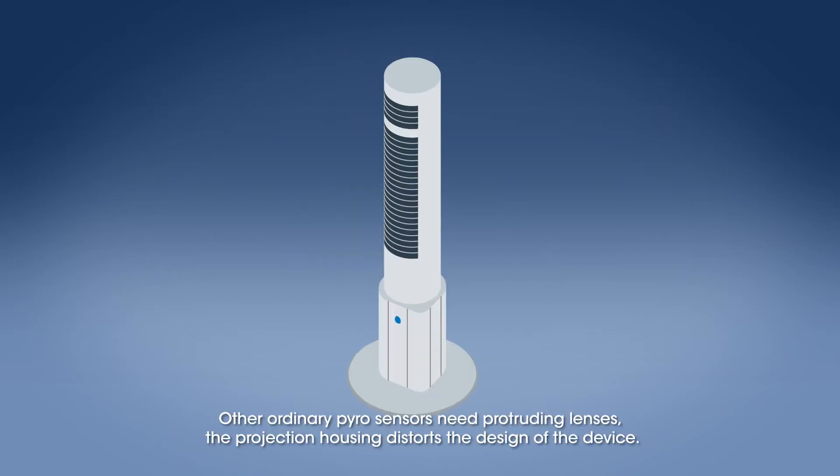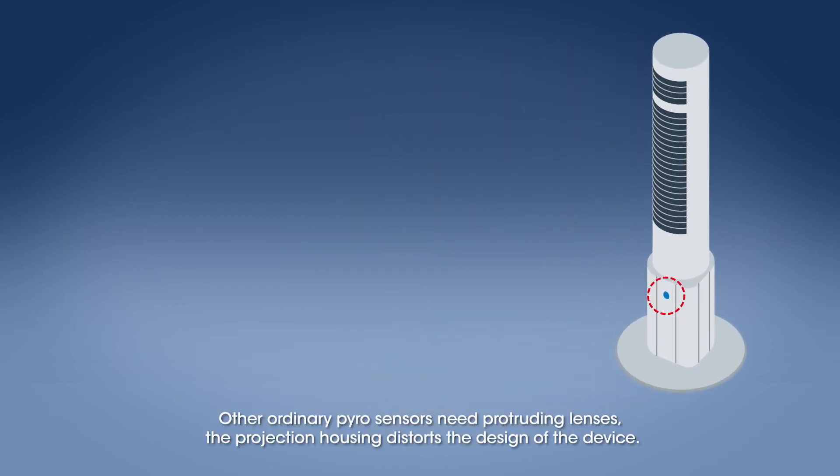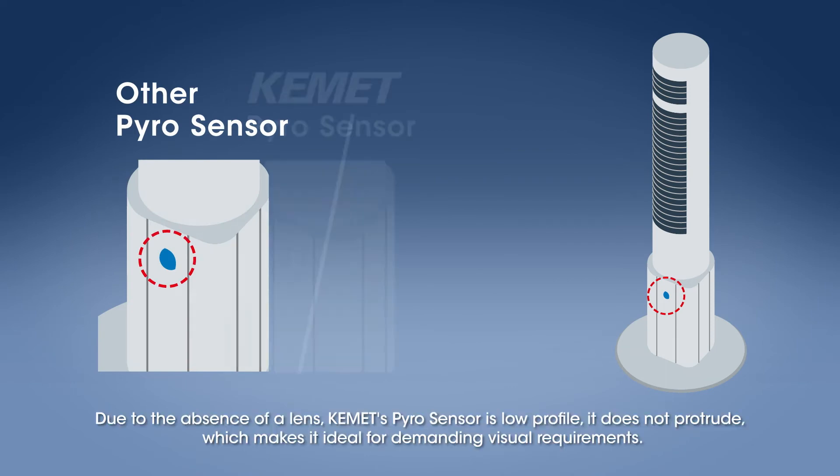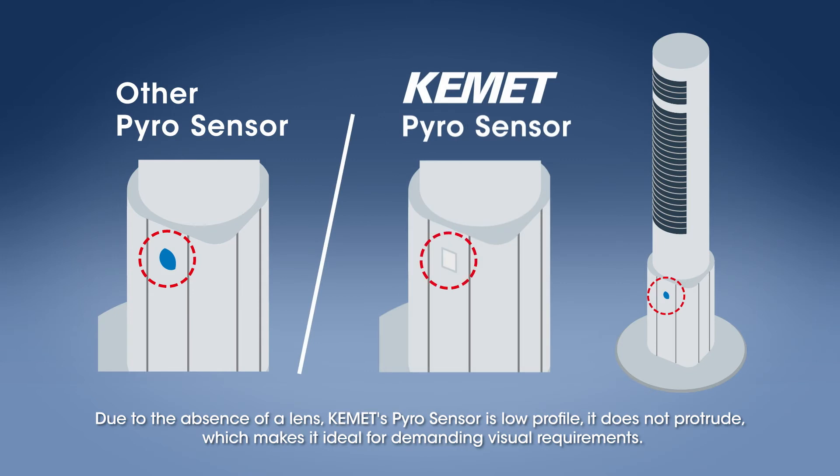Other ordinary Pyro Sensors need protruding lenses. The projection housing distorts the design of the device. Due to the absence of a lens, KEMET's Pyro Sensor is low profile. It does not protrude, which makes it ideal for demanding visual requirements.